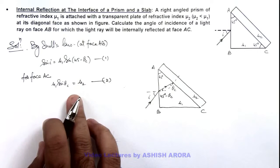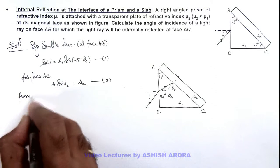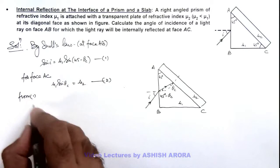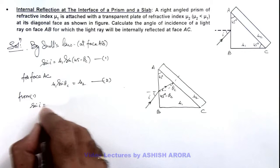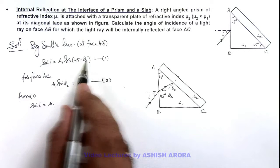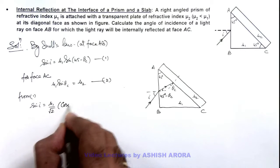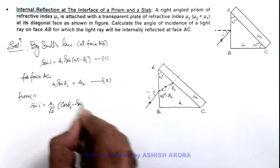If we further simplify these relations, then from equation 1 we can get: if you open it, sin i equals μ₁ times (sin 45° cos θc minus cos 45° sin θc), so this is (μ₁/√2)(cos θc minus sin θc).